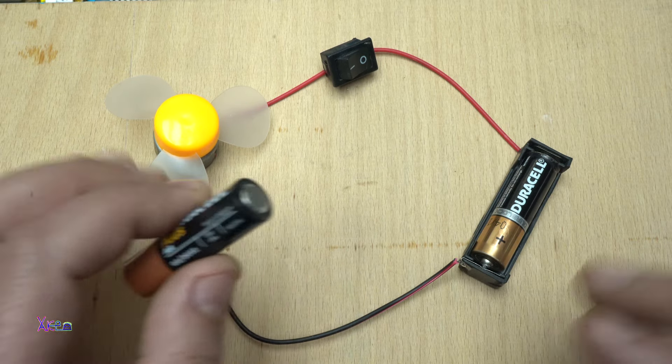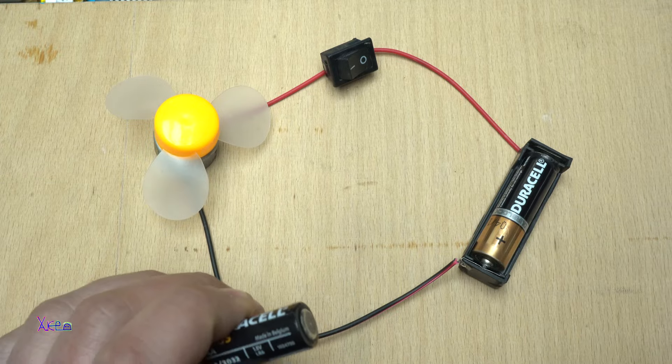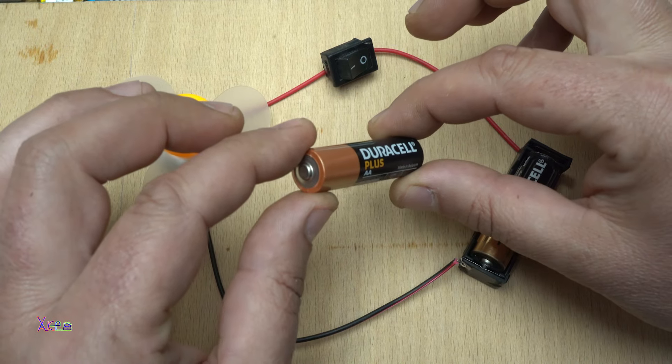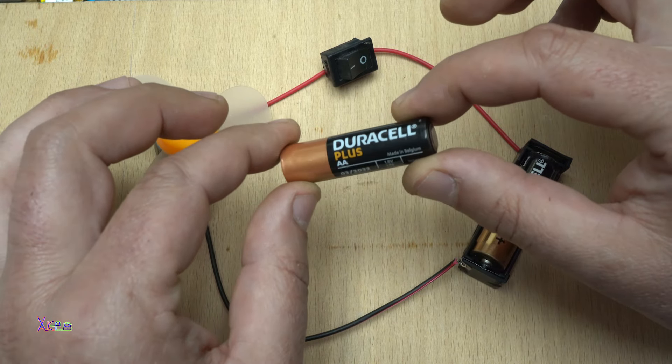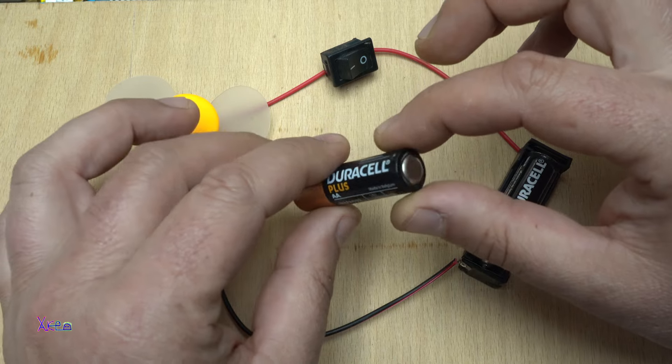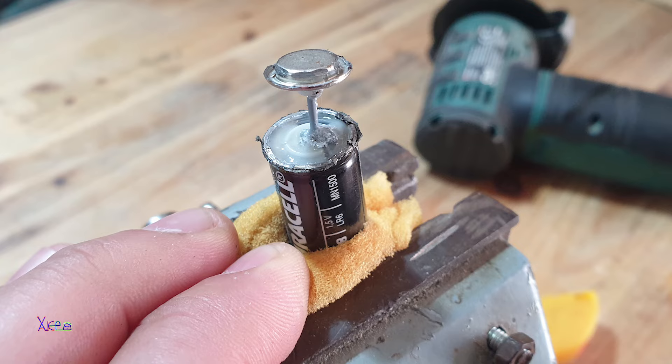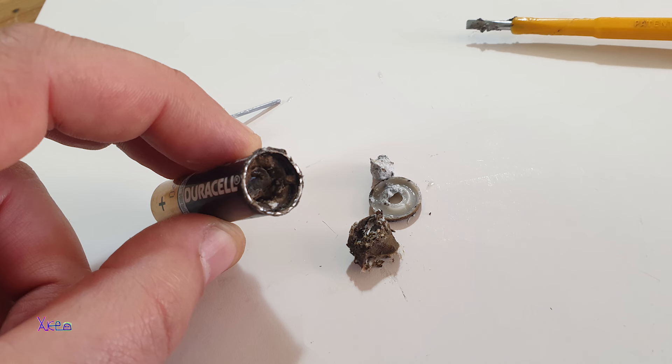Now I'm going to explain how this reverse engineering is working. I have used an ordinary 1.5 volts AA battery, and you can see in the pictures.